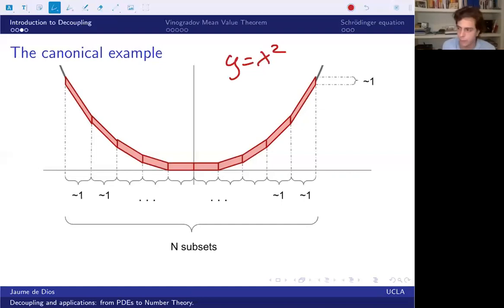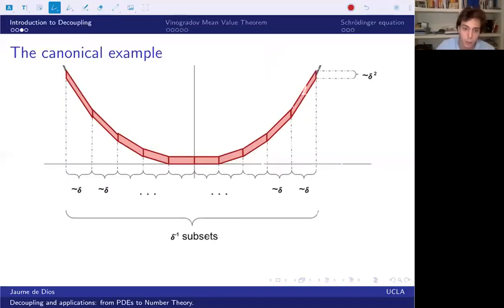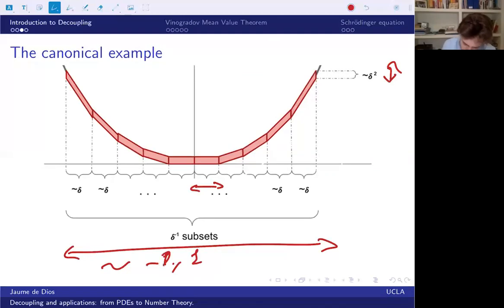Then we can cover it with these rectangles and parallelepipeds which are just shifted versions of these rectangles. There's another way to cover the parabola if we want to restrict ourselves to a compact subset of the parabola, which is instead choosing subsets that have size delta here and size delta squared here by scaling the previous picture. And then we have delta to the minus one subsets so that this whole size is like approximately minus one to one. And these are going to be our examples. These examples are going to be important both in number theory and in partial differential equations for very different reasons.